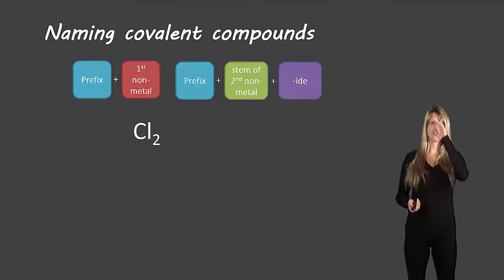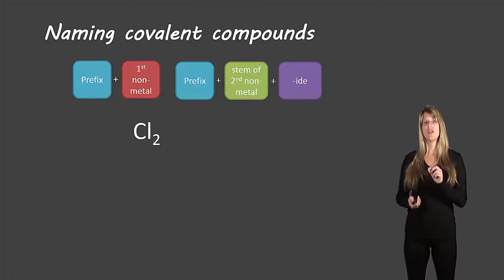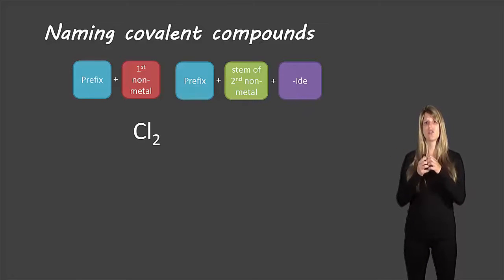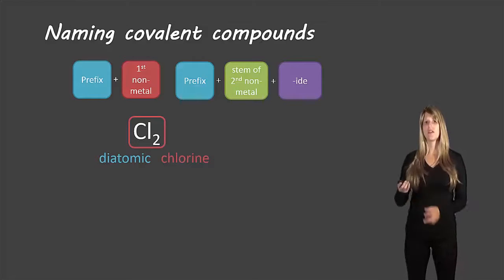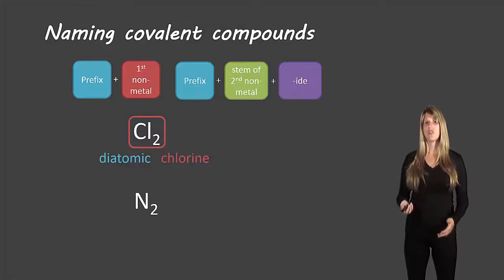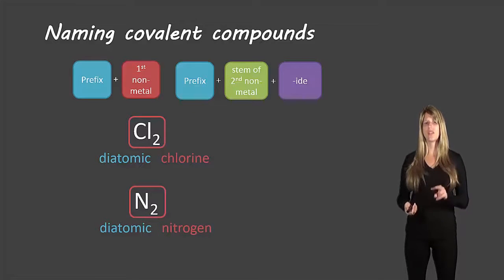Here's another exception for covalent compounds: when you have only one element but there are two of them. This applies to non-metals — two non-metals sharing electrons evenly. Even though it's the same element, two atoms are coming together, so we call these diatomic elements. 'Di' for two, 'atomic' for atoms. So Cl2 would be called diatomic chlorine, and N2 would be diatomic nitrogen. We put the word 'diatomic' in there and then name the element.